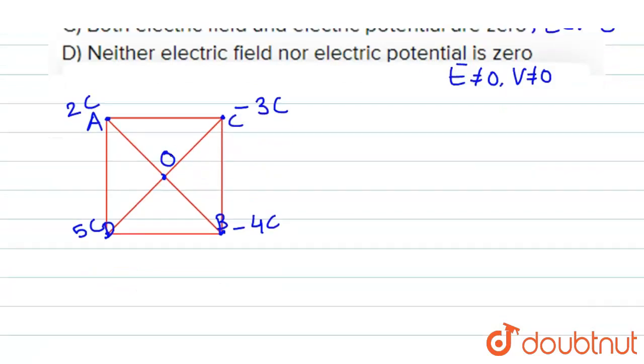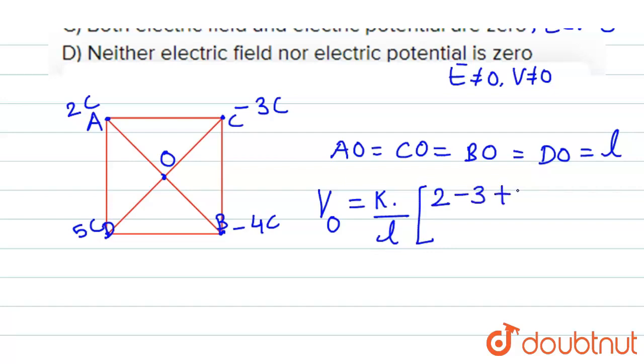We have to find the electric field and potential at point O. Let's consider the distance AO or CO, BO and DO are same because this is a square and diagonals bisect each other at 90 degree. Therefore, we can find the electric potential at point O is K divided by any one distance. Suppose we are taking this as L, then within bracket the addition of all the charges, so 2 minus 3 plus 5 minus 4, so this is equal to 0. Hence, we get the electric potential as equal to 0.